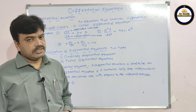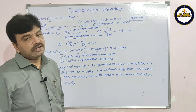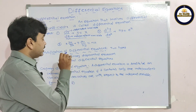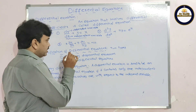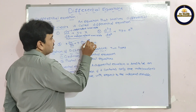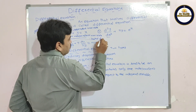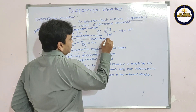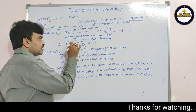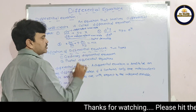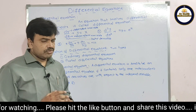Let us see another example: d²y/dx² + 7y = eˣ. Here also we have a differential quotient, so this equation is called a differential equation. For a third example, we have ∂u/∂x — this is called a partial derivative. The equation is: x(∂u/∂x) + y(∂u/∂y) = nu. This equation is also called a differential equation.